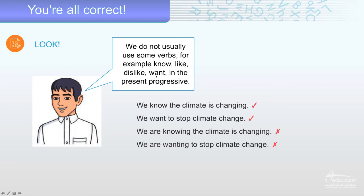Know, like, dislike, want. We are wanting to stop climate change. That's incorrect. We are wanting. That's incorrect. We don't use want in the present progressive. Don't forget that.